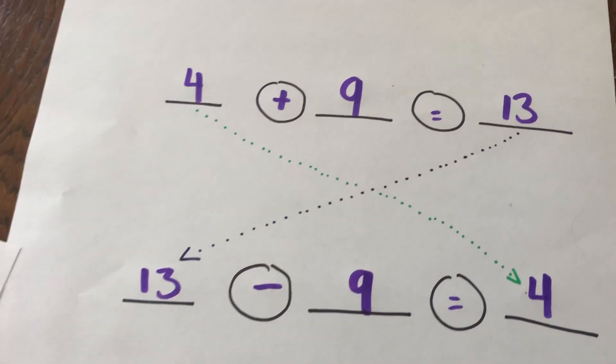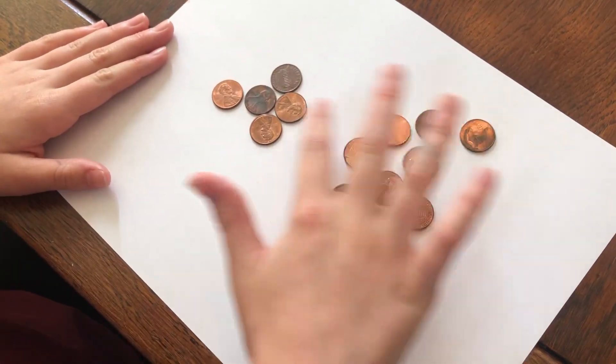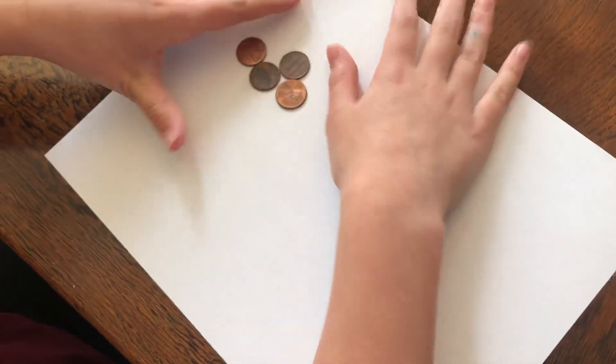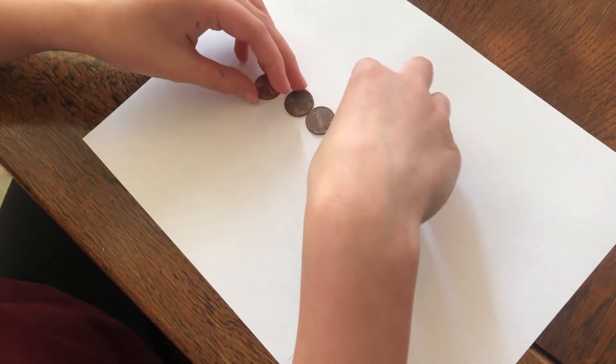So if you look at it this way, you have your pennies here. You need to give away 1, 2, 3, 4, 5, 6, 7, 8, 9. And you have 4 left. So you had 13 pennies, you took away 9, and you had 4 left. Yeah. That's subtraction.